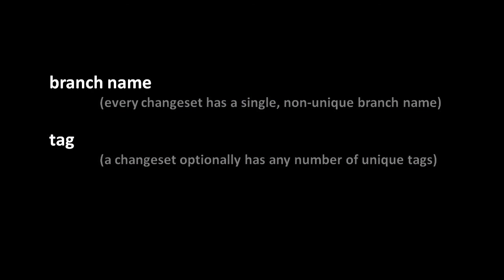Because revision numbers are not terribly friendly, you can elect to give changesets in Mercurial branch names and tags. The main differences are: first, the branch name is an immutable property of a changeset — once you create the changeset, you can't change the branch name. Second, branch names need not be unique — multiple changesets within the same repo can have the same branch name. Third, each changeset has one and only one branch name. Tags, in contrast, are mutable properties stored within the repo separate from the changesets themselves. A tag within a repo is meant to only apply to just one revision, but unlike with branches, you can give a single changeset multiple tags.